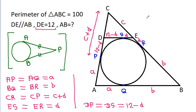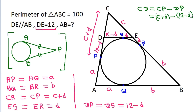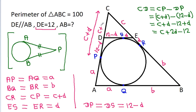And CD will be equal to CP minus DP, which is (c plus d) minus (12 minus d), and that is c plus 2d minus 12.